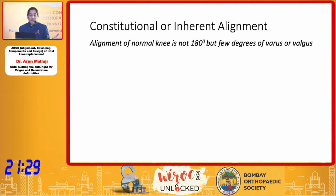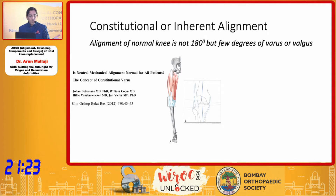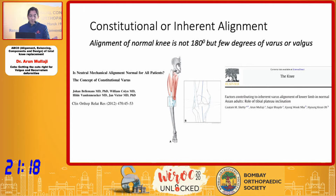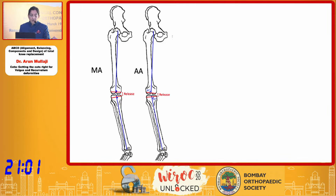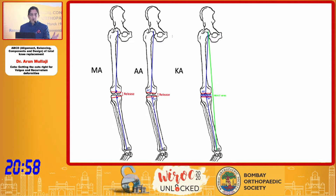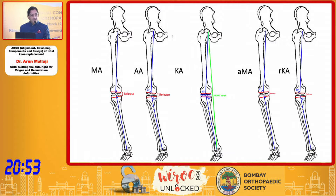With the advent of constitutional or inherent alignment, there were two key papers — one from Bellemans in the Western population, and one from our combined study of the Japanese, Chinese, and Indian population — which said basically the same thing: that nobody was at 180 degrees, but in a few degrees of varus, and a handful of people were in a few degrees of valgus. In addition to this, you had kinematic alignment, adjusted mechanical alignment, and restricted kinematic alignment.